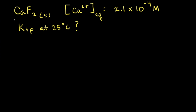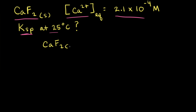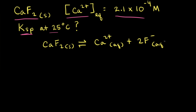Let's say we have some solid calcium fluoride that we add to pure water at 25 degrees Celsius. Eventually equilibrium is reached, and the equilibrium concentration of calcium 2+ ions is measured to be 2.1 times 10 to the negative 4th molar. Our goal is to calculate the Ksp for calcium fluoride at 25 degrees Celsius. The first step is to write out the dissolution equation: CaF2 (solid) → Ca2+ (aqueous) + 2F− (aqueous).